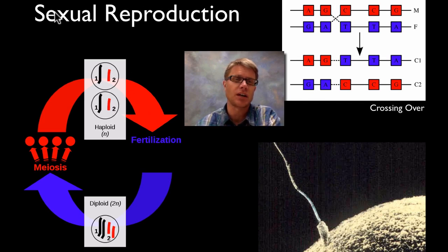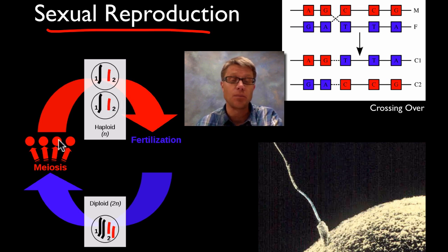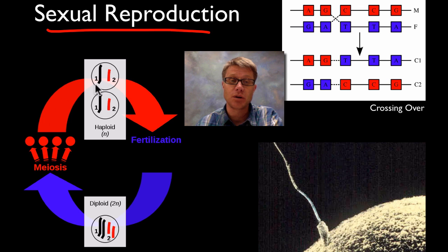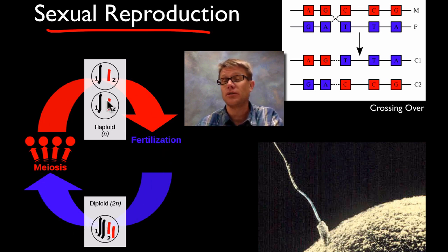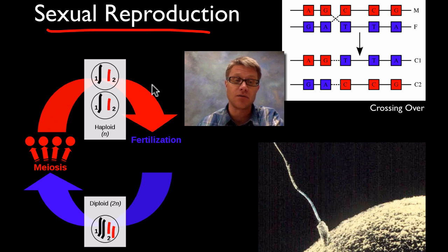Most animal life uses sexual reproduction, and the reason why is that it gives us variation. This is the cycle of life: through meiosis we produce sperm and egg, those sperm and egg fertilize one another to produce a zygote, and those make an organism which will eventually produce gametes through meiosis again. It just goes over and over again with meiosis and fertilization on either side.